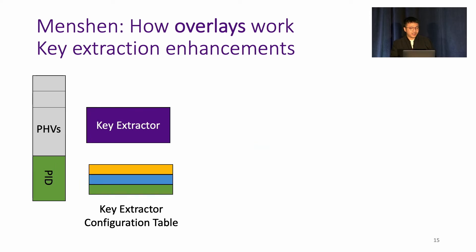So let's take key extraction as an example. Different programs may have different table keys. Menshen deals with this by maintaining a key extractor configuration table in the registers. As you can see, different colors represent different configurations for different programs. When a packet comes in, the PID, which is green in this example, is used to index the configuration table to get the green configuration for the key extractor to use. The key extractor then selects the fields from PHV according to this configuration to construct the table key.